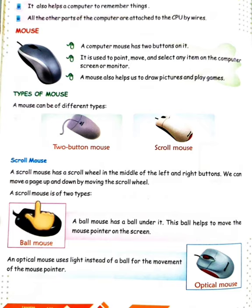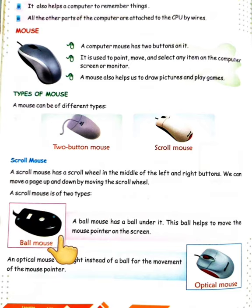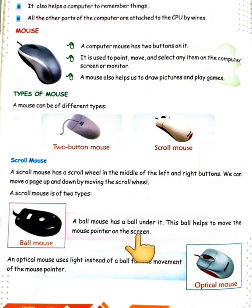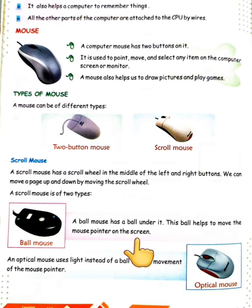A scroll mouse is of two types. The first one is ball mouse. A ball mouse has a ball under it. This ball helps to move the mouse pointer on the screen.